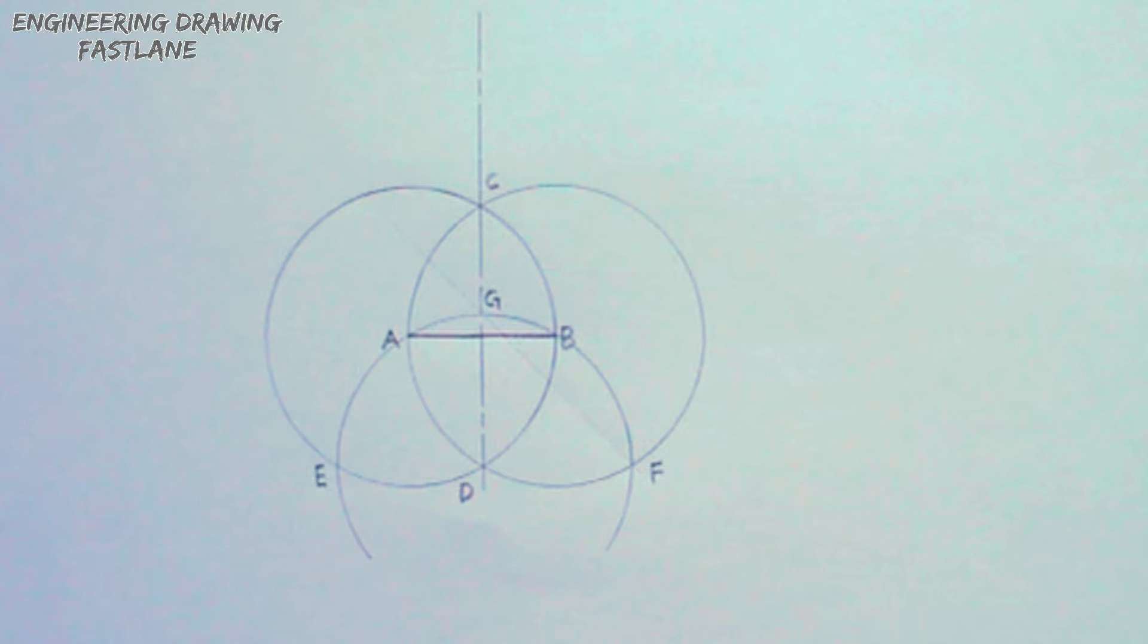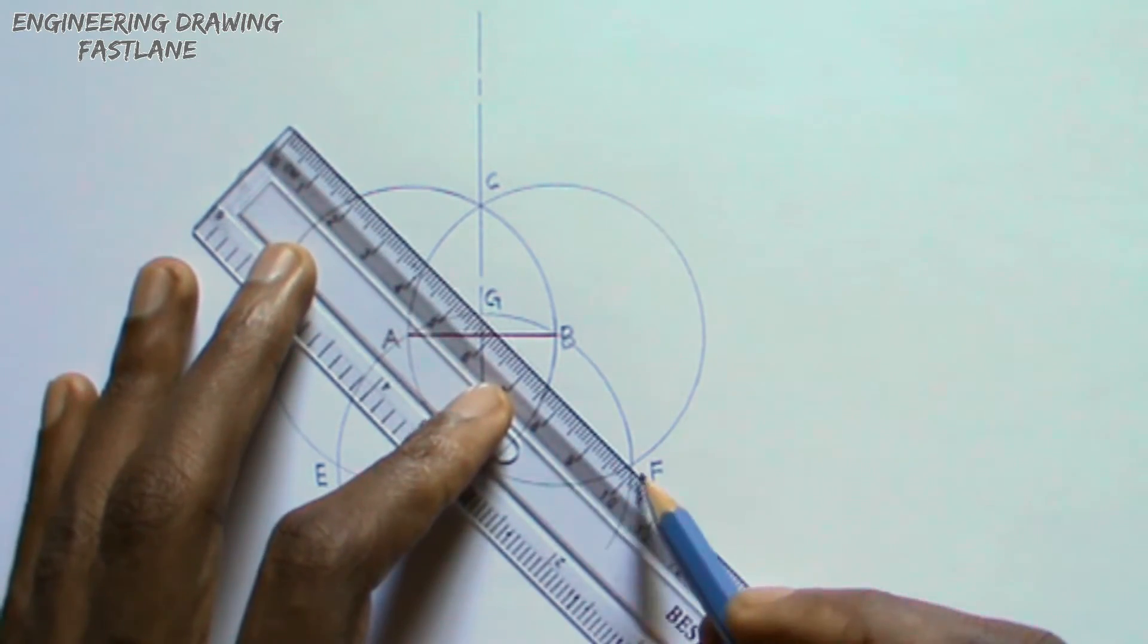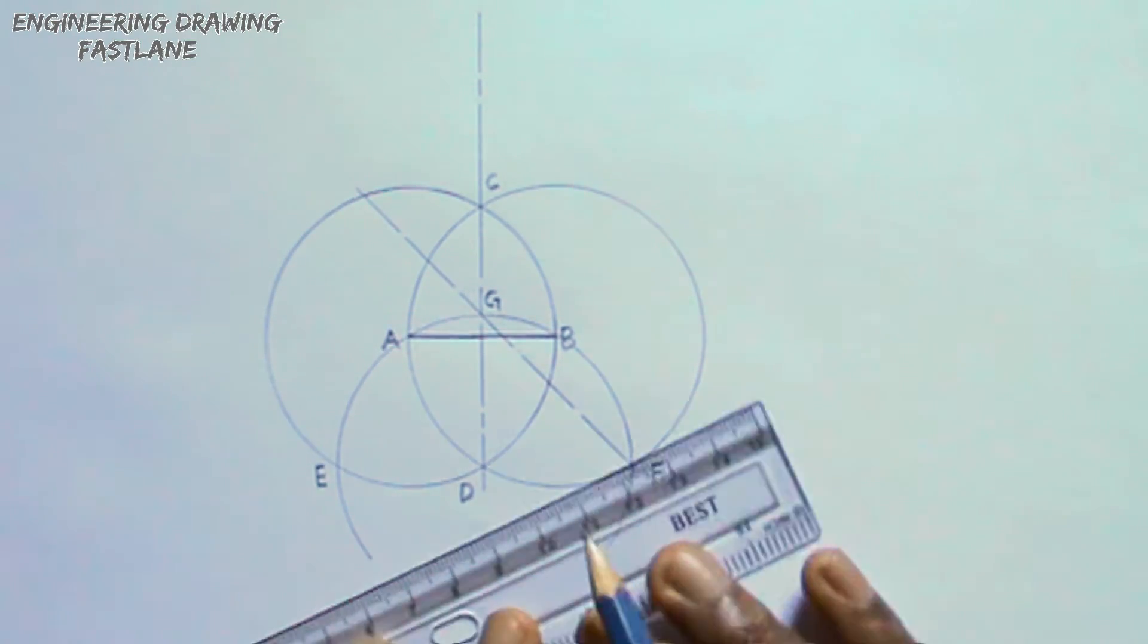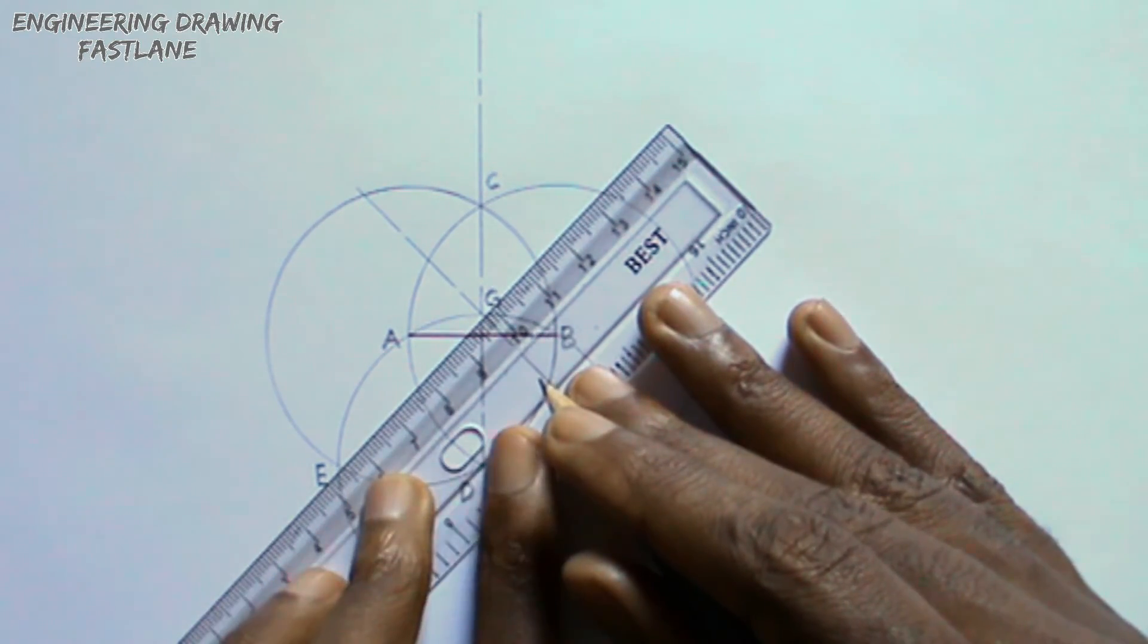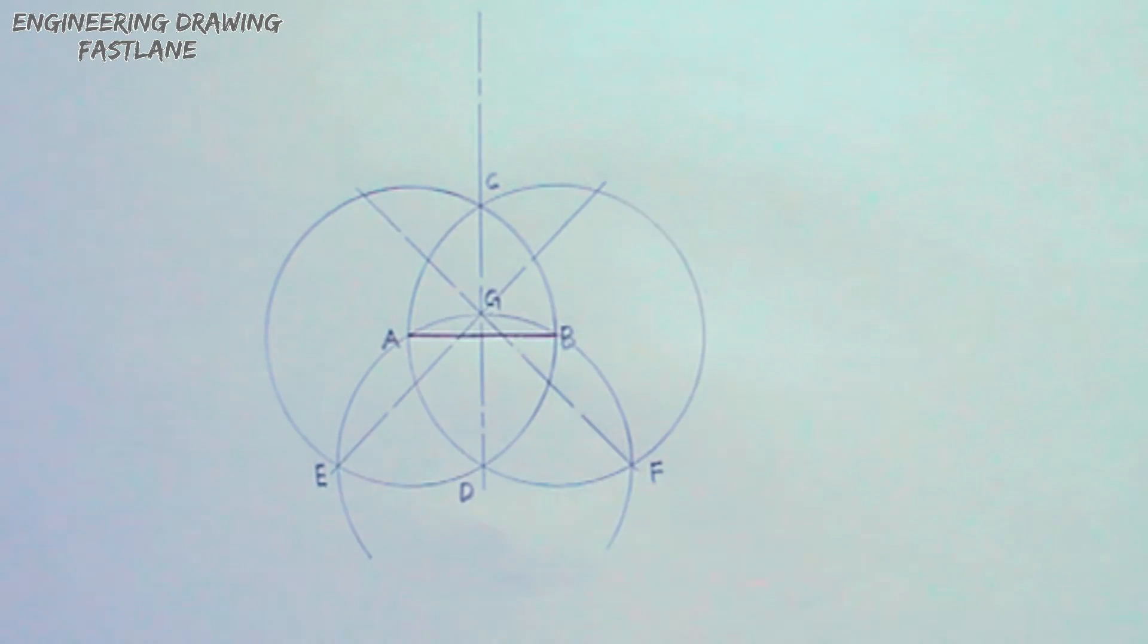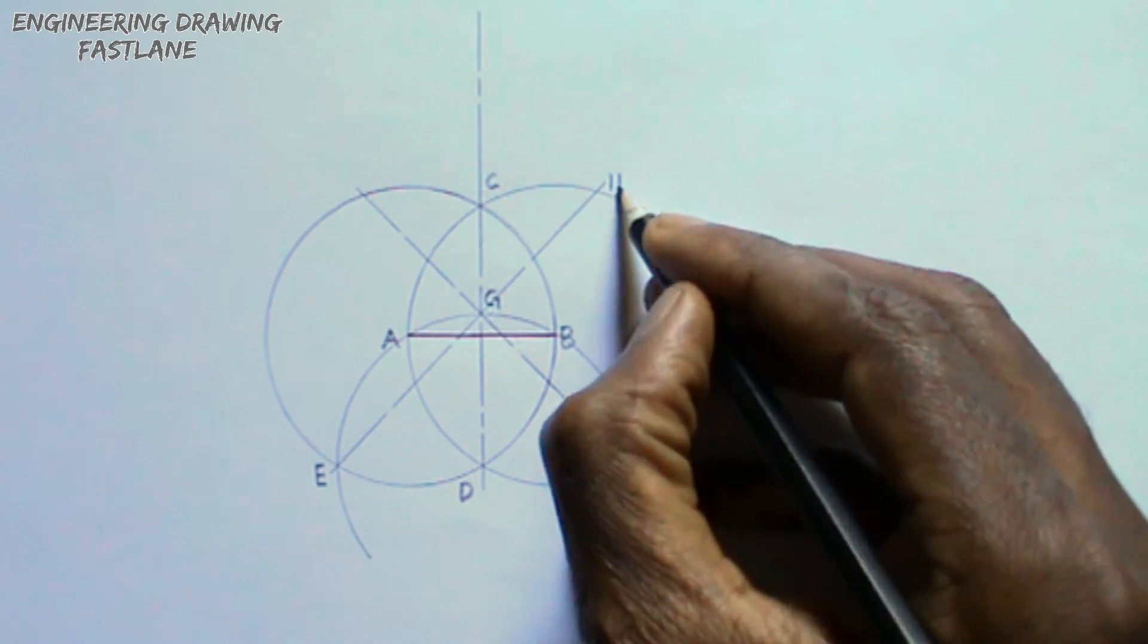I will draw a line passing through point E and point G, and another line passing through point F and point G. These lines should intersect the circles. I will label the points where they intersect the circles H and I.